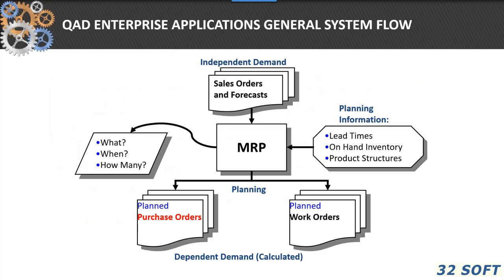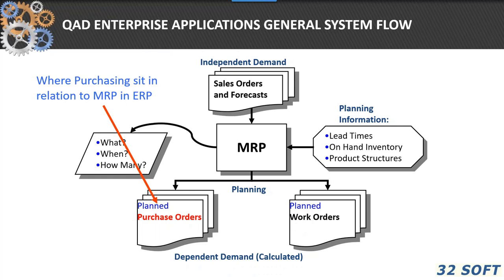We'll look at purchasing just a little bit in terms of MRP. We've covered MRP in webinars from June and July 2018. Here is where purchasing sits in terms of MRP in the QAD ERP system. We've got sales orders, planning parameters, lead times, etc. that drive into MRP, and then MRP plans purchase orders. We'll talk about how we take those MRP planned orders and turn them into purchase orders a little bit later. If you want to look at some of the MRP aspects on our 32Soft website, just type in MRP and it'll take you to that series of webinars.